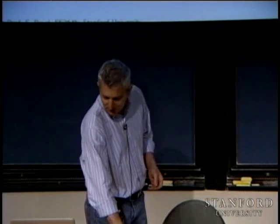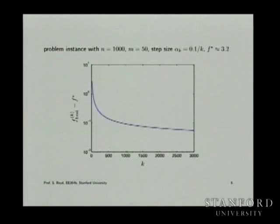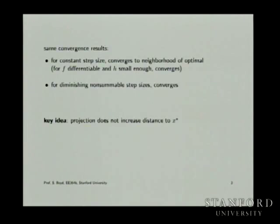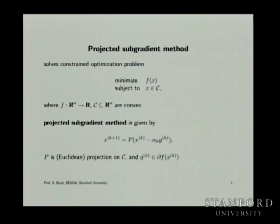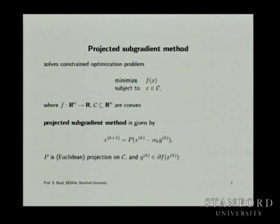Let's look at the projected subgradient method. The projected subgradient method — let me remind you what it is. It's really quite simple. You call f.get_subgrad here at x to get a subgradient, so you need a weak subgradient calculus method implemented. You get a subgradient of f.